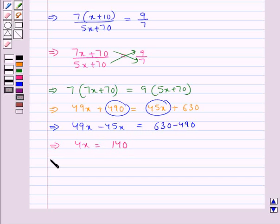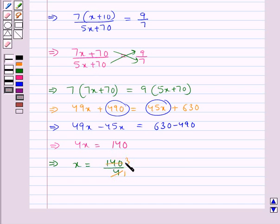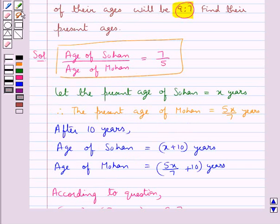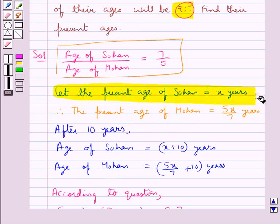That is, we get x is equal to 140 upon 4, which gives us x is equal to 35. We had assumed the present age of Sohan to be x years.